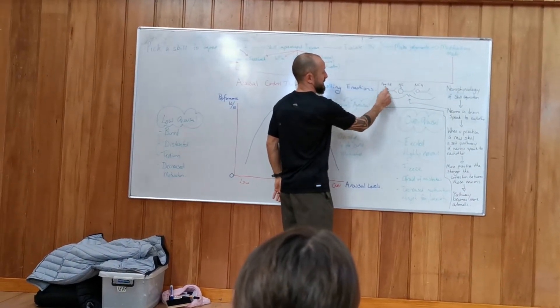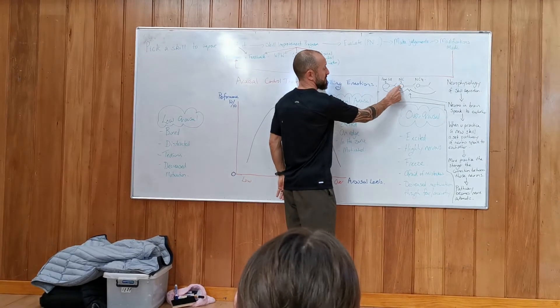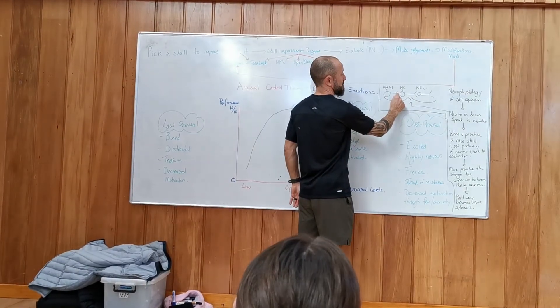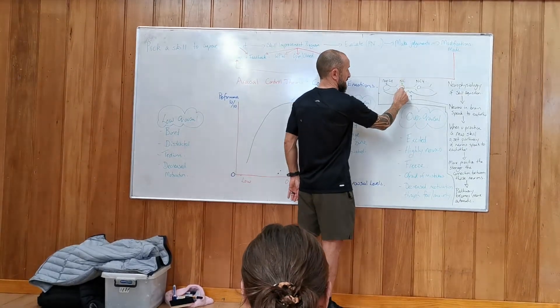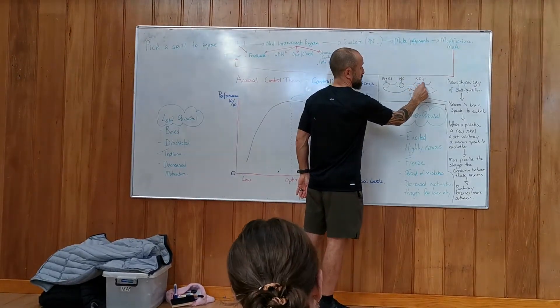So, basically this one here decides it wants to send a message to this one. So, it sends an electrical impulse along here via chemicals. And then it communicates that one. That one goes, oh, okay, it's communicated. I'm going to pass it along the chain.